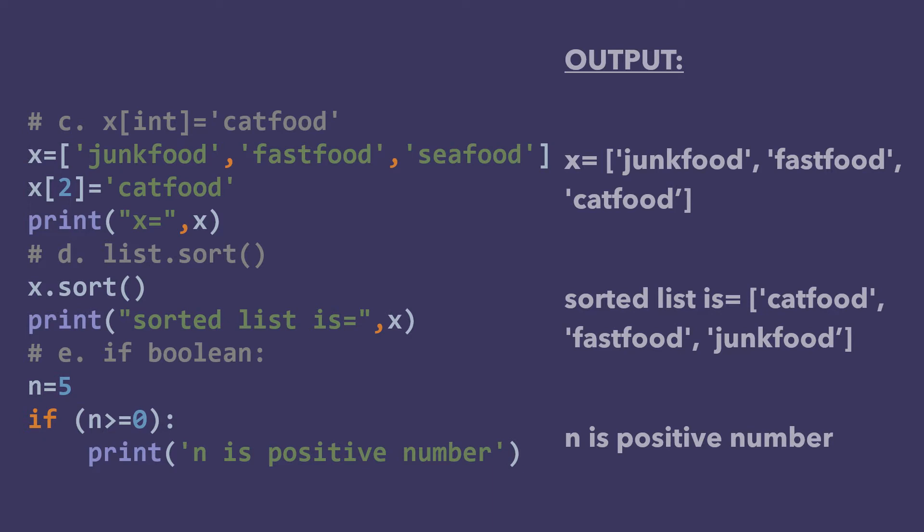The next one is dash.sort(). The sort function is called with a particular data type. You can sort a list, so you can write list as the data type. To demonstrate, I have used the sort method on list variable x. The sorted list is: cat food, fast food, and junk food — sorted in alphabetical order.